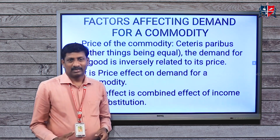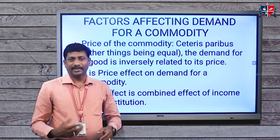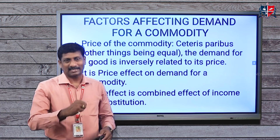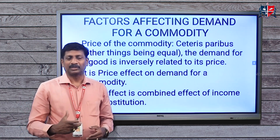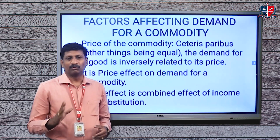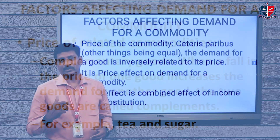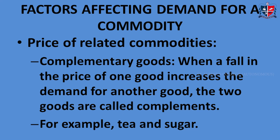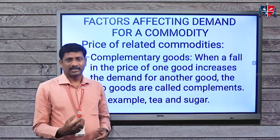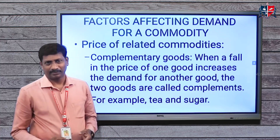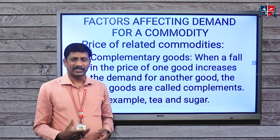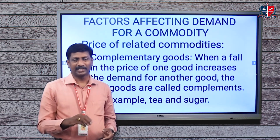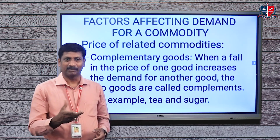Demand is a quantity purchased at a point of time at a given price. Quantity demanded is the amount of a commodity that buyers are willing and able to purchase. Demand is the amount of a good that a consumer is willing to buy and able to purchase over a period of time at a certain price — this is known as the quantity demanded of a commodity.